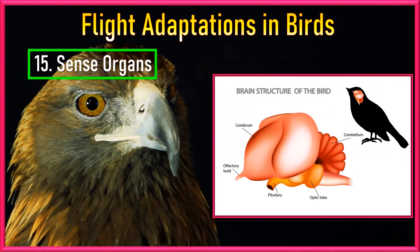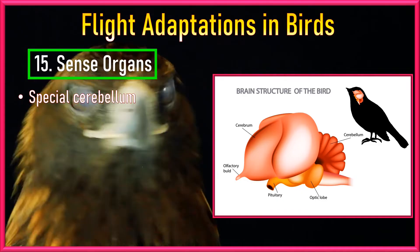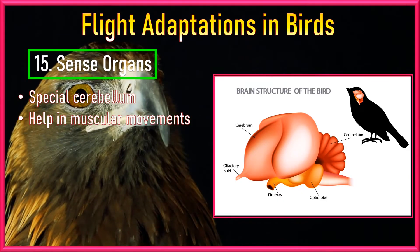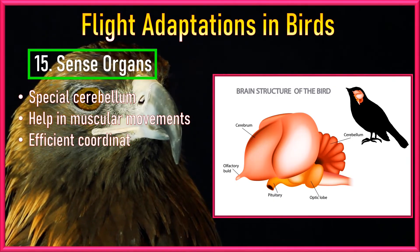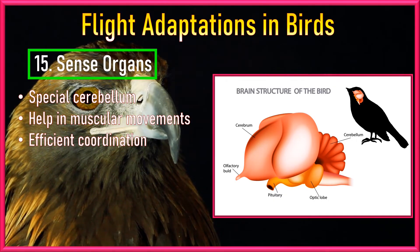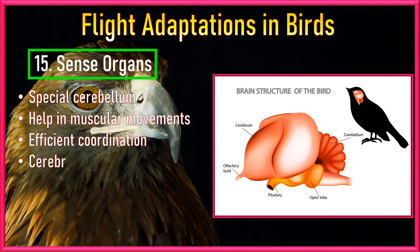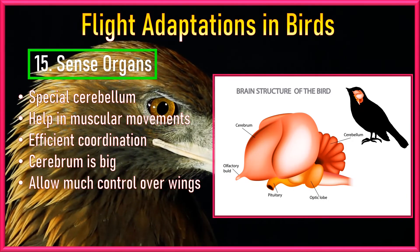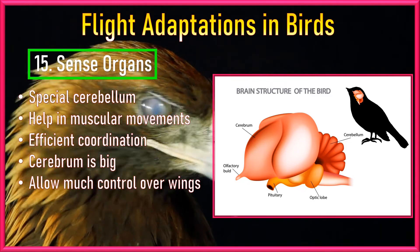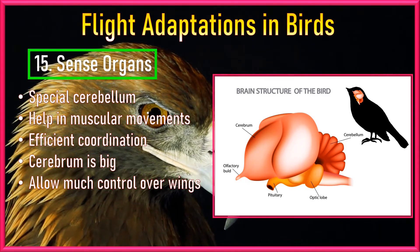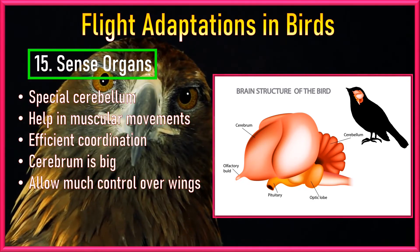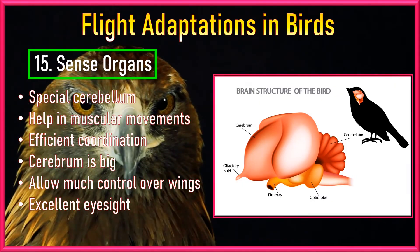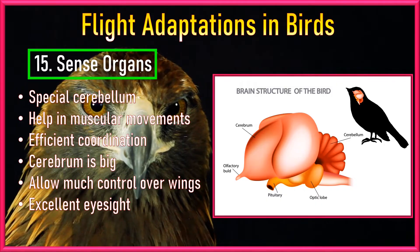Number 15: Sense Organs. Birds have a special part in their brain called the cerebellum that helps them move their muscles really well, making them very good at coordinating their movements. They also have a large part of their brain called the cerebrum that controls their wing movements voluntarily. Birds also have really good eyesight because their optic lobes are highly developed.